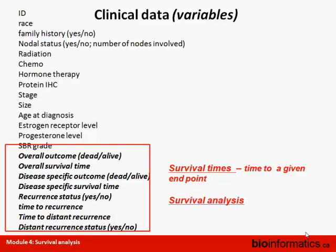There is a special type of clinical variable that pertains to time — these are called survival times. For instance, overall outcome (dead or alive) is a status related to survival time, then overall survival time of the patient, disease-specific outcome, disease-specific survival time, recurrence status, time to recurrence, time to distant recurrence, and status of distant recurrence. These require a special type of analysis called survival analysis.